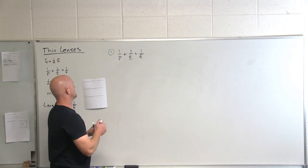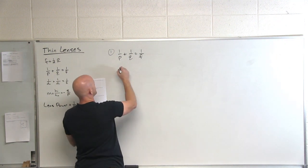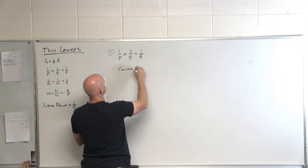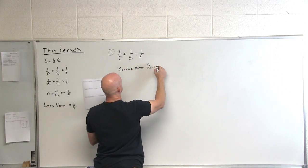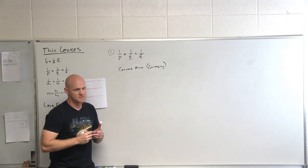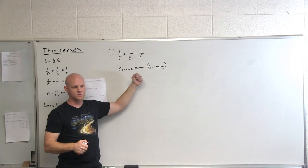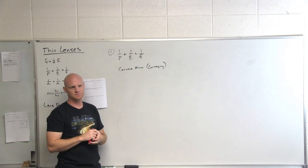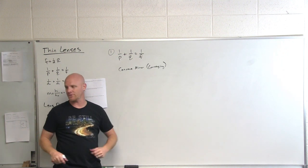First of all, let's think about the concave mirror — is your concave mirror converging or diverging? That's your converging mirror. So with it being the concave converging mirror, is the result the same no matter where the object is placed? No. It's the diverging ones that are always the same.